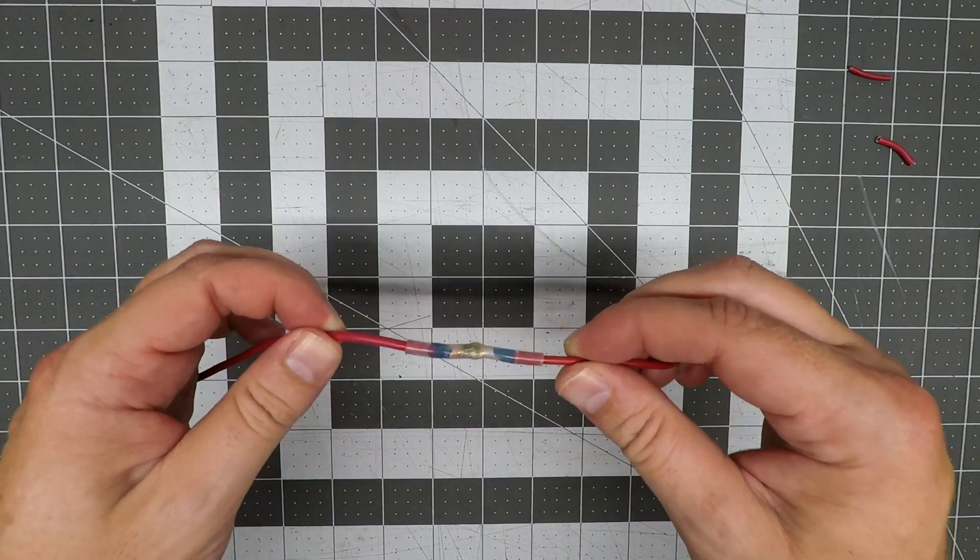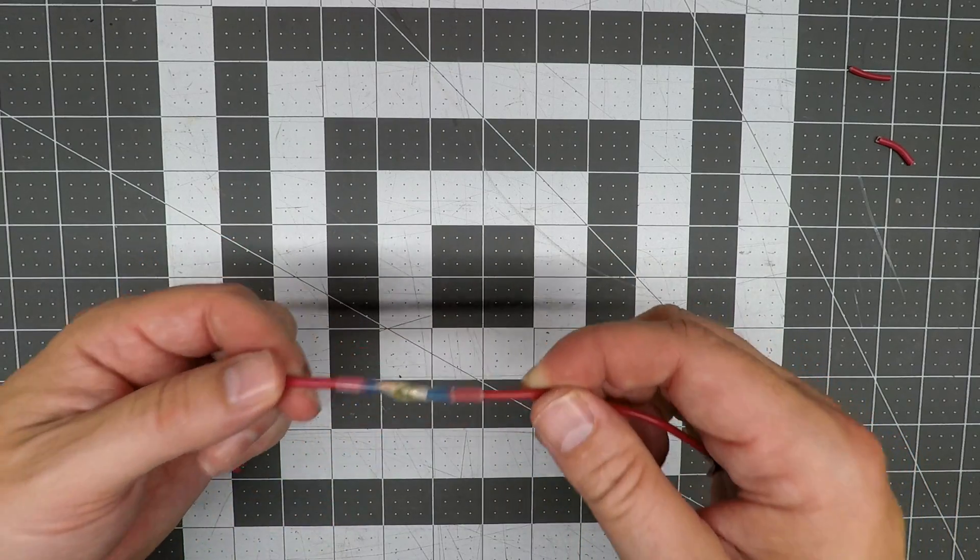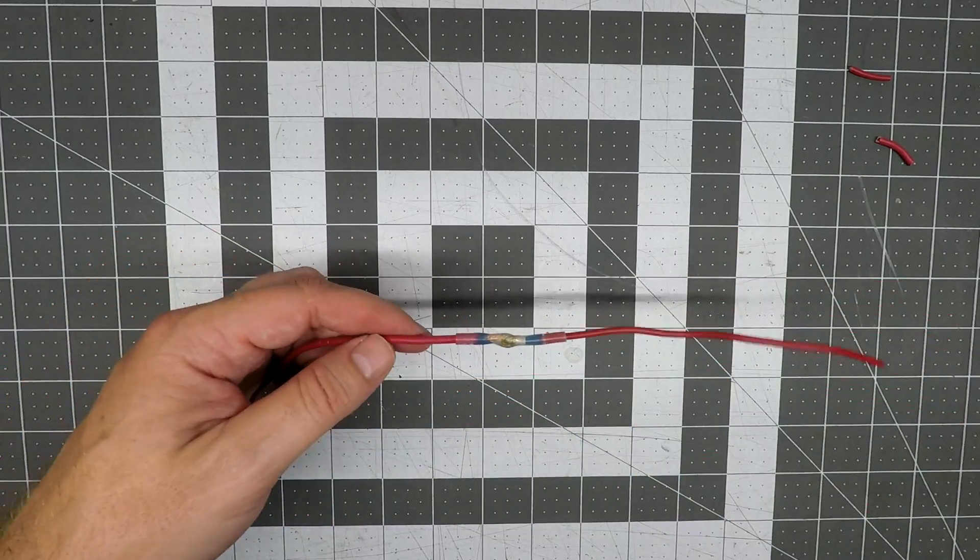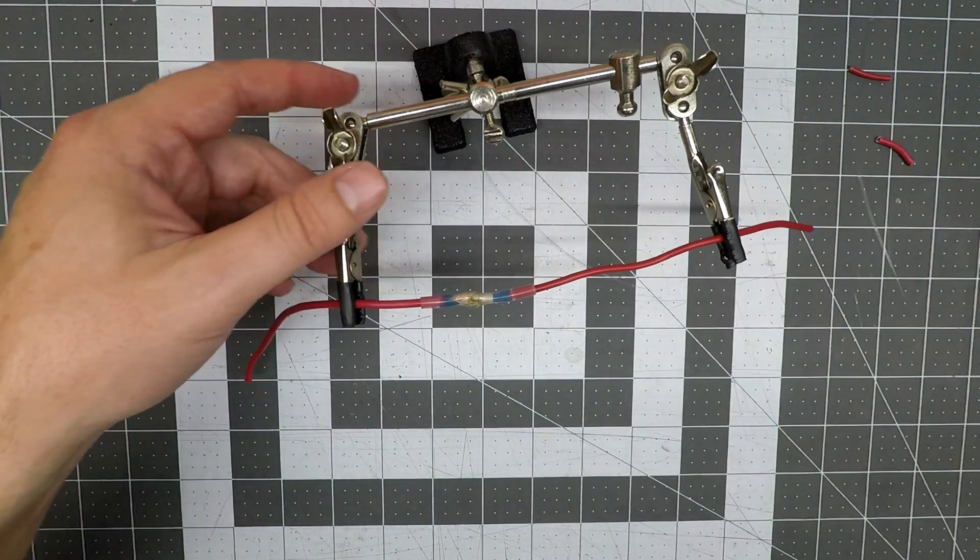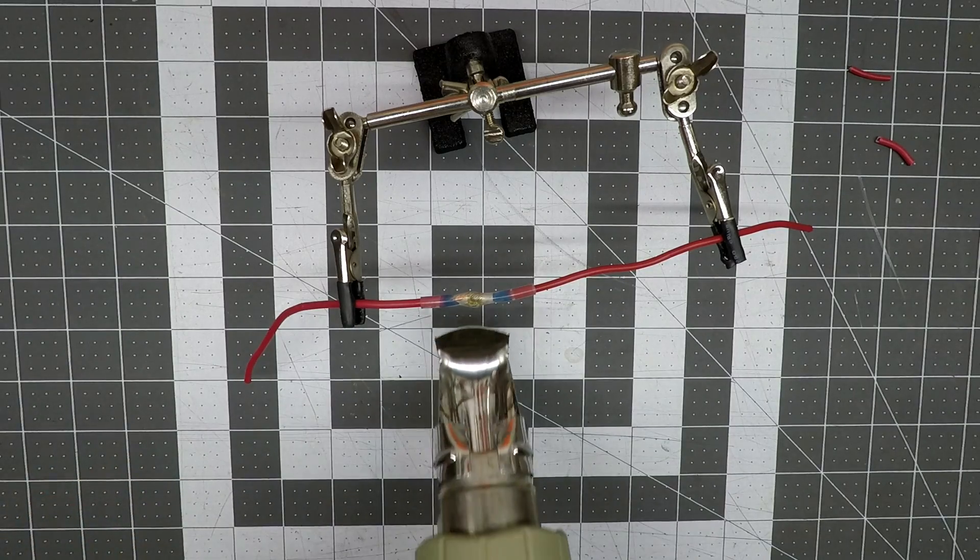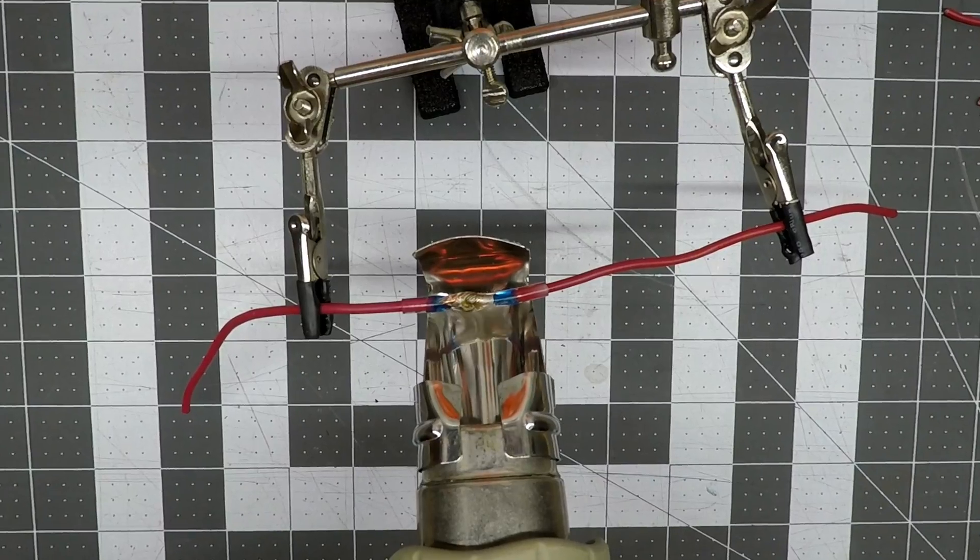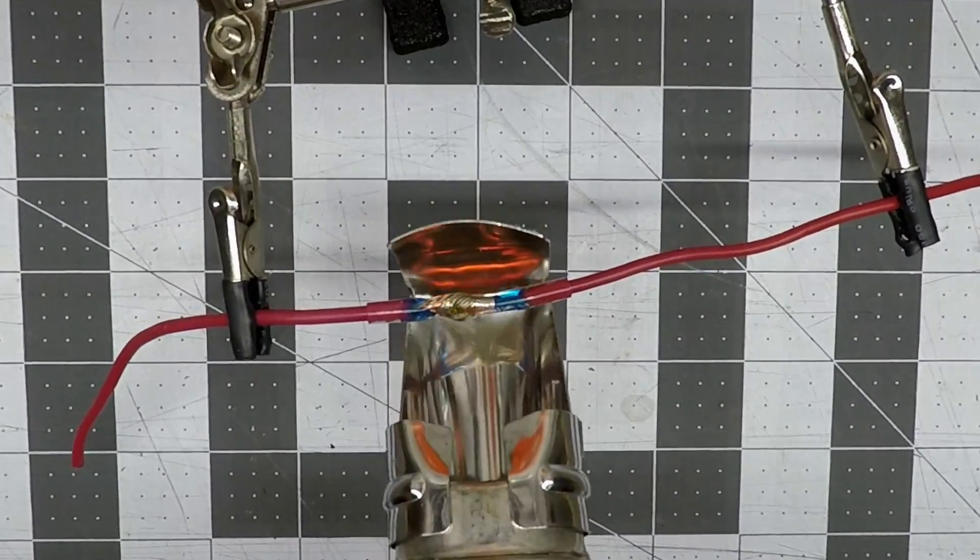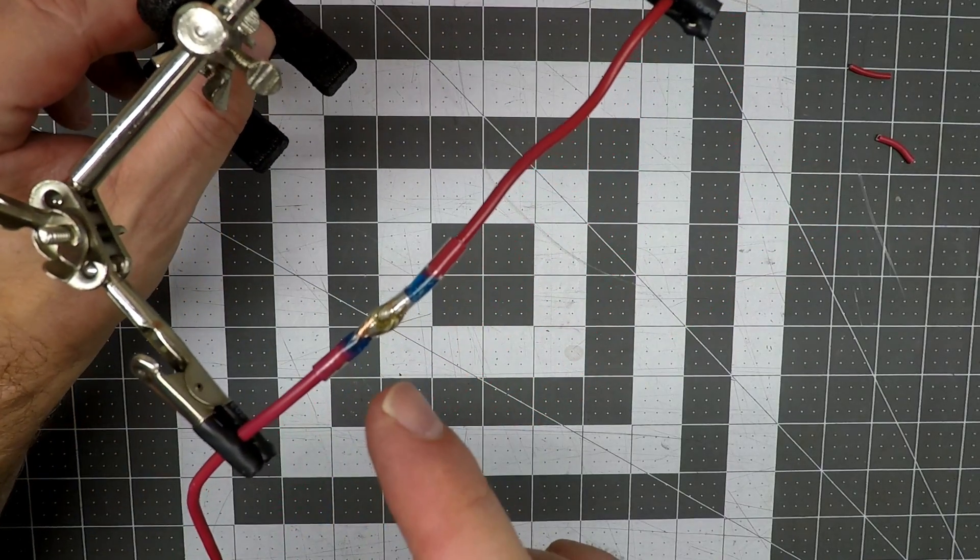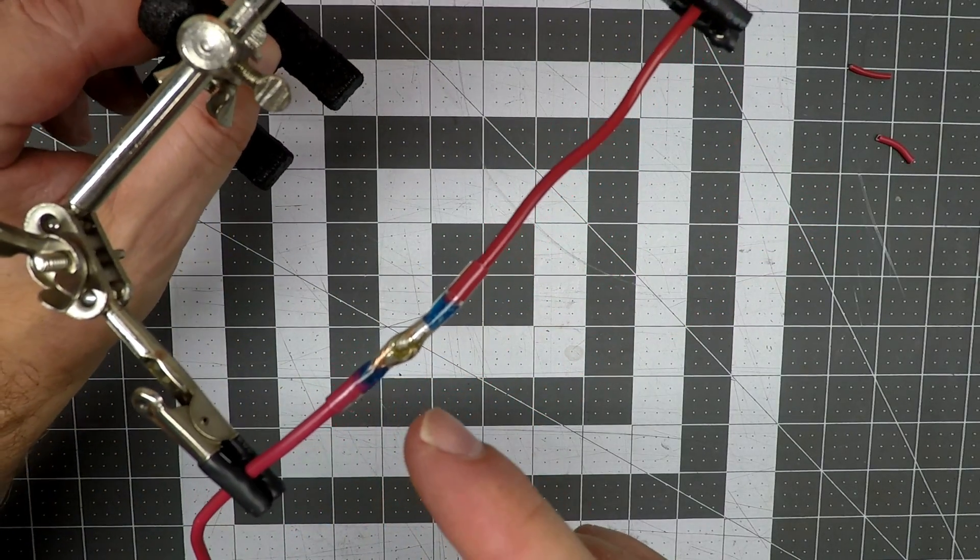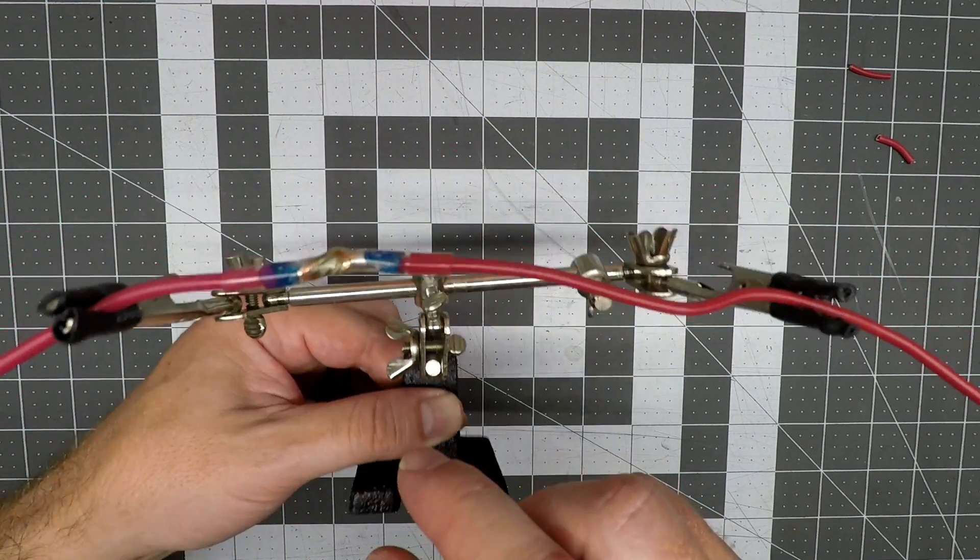So I got curious about a couple things. If it's low temperature solder, then what happens if you use it in an engine compartment where it gets hot again? So let's find out if it makes any difference whatsoever. We're going to heat it up again. So it appears that once the low temperature solder has melted and gotten into the wires, heat doesn't have much of an impact on it.